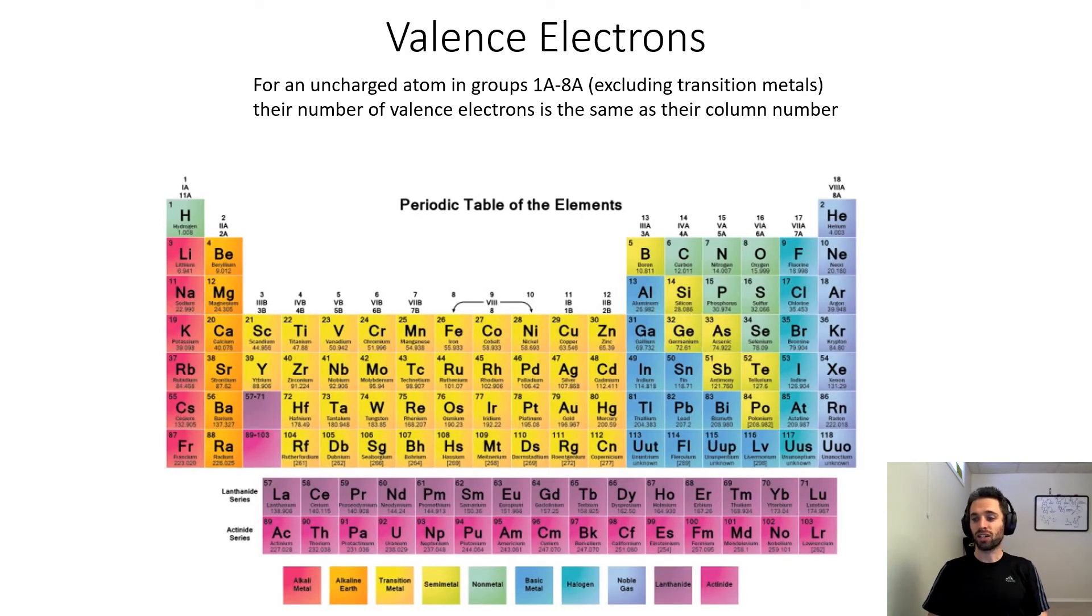For example, anything in group 1A—let's take lithium, sodium, potassium—these all have one valence electron. With lithium, for example, because its atomic number is three, it has one valence electron and two core electrons. Sodium would have one valence electron and ten core electrons.